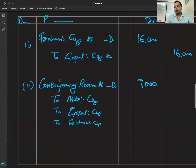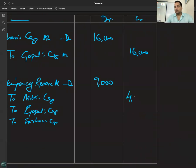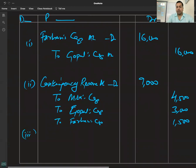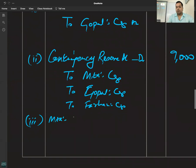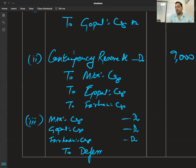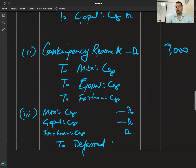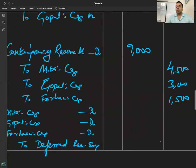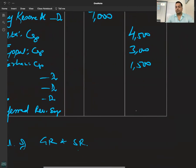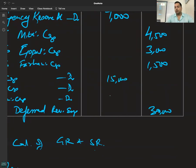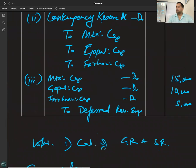Old ratio was 3:2:1. For the loss entry: Meeta's Capital, Gopal's Capital, Farhan's Capital — debited. Deferred Revenue Expenditure / Advertisement Suspense account — 30,000 written off. Distributed in old ratio 3:2:1.